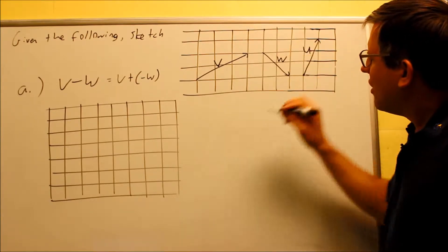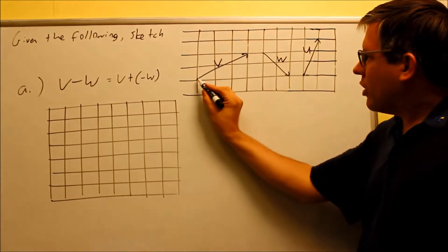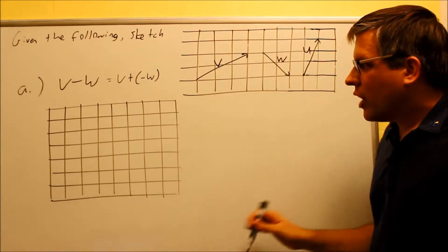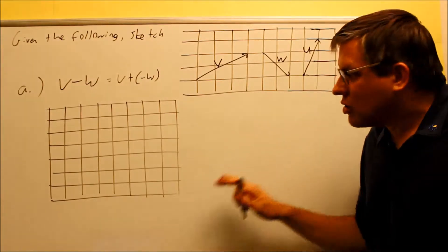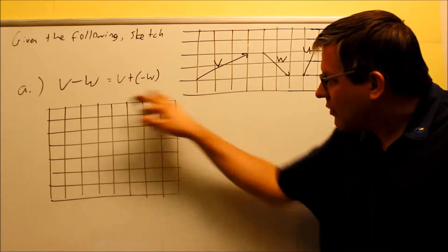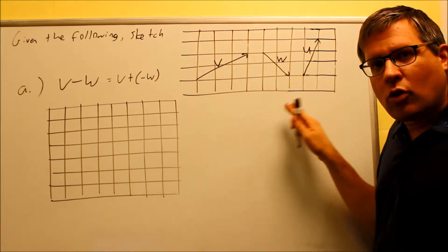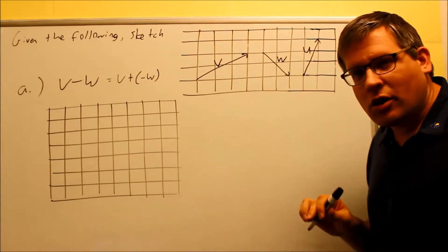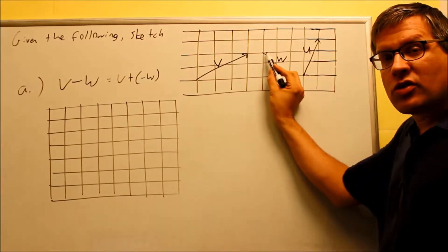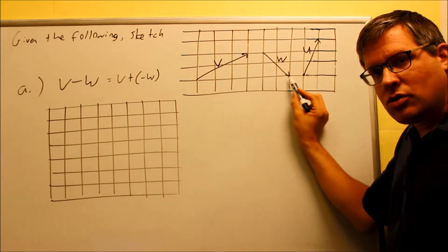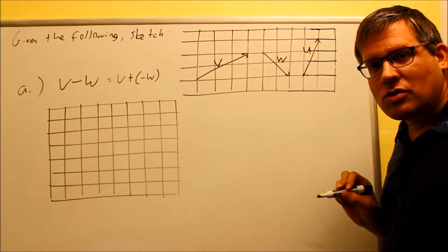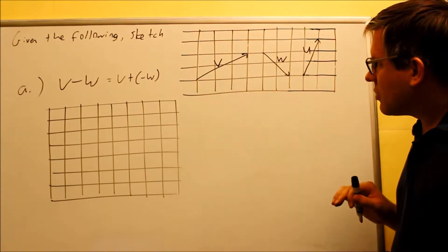So this vector V — the arrowhead is right here — wherever you start it from, we're always going to go three places to the right and up two units. These types of questions usually give you a grid to draw in, or you can use grid paper. The W, wherever we start, we're always going to go down two units and two to the right. And U goes one to the right and up three units. So this is all provided and given to us.